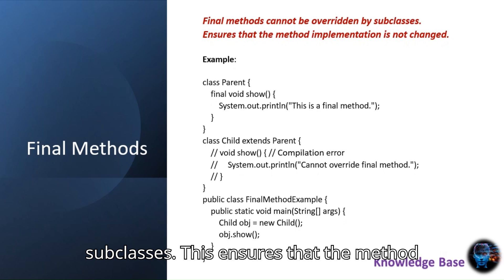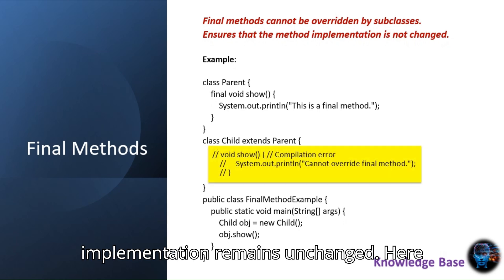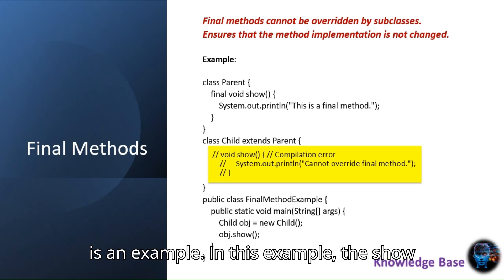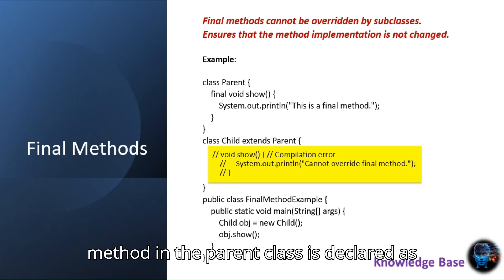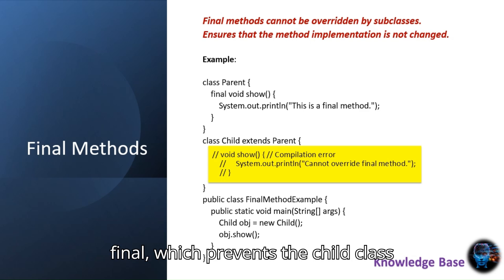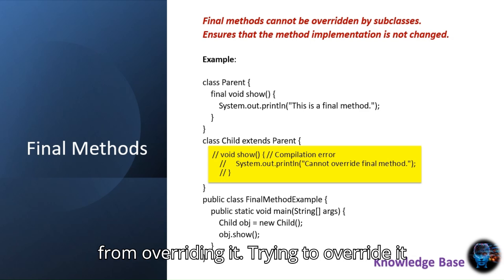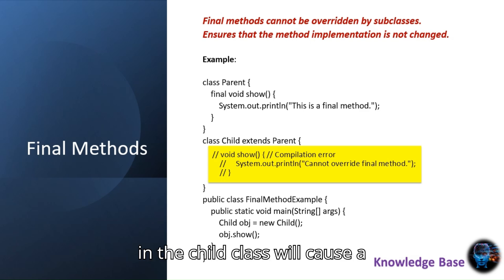Next, we have final methods. A final method cannot be overridden by subclasses. This ensures that the method implementation remains unchanged. Here is an example. In this example, the show method in the parent class is declared as final, which prevents the child class from overriding it. Trying to override it in the child class will cause a compilation error.